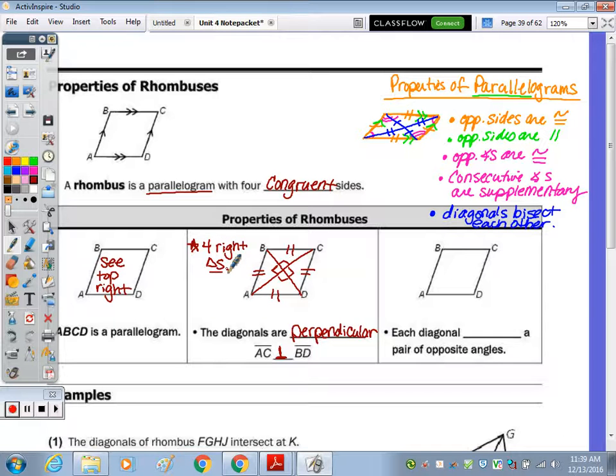And then the last property is that each diagonal is going to bisect a pair of opposite angles. So this angle right here, I'm going to say, looks to be acute. So let's say it's 40. What it means to bisect is when you draw this diagonal, it splits that 40 degree angle into two? 20. 20. Good, Tony. So this is 20, and this is 20. Well, we know opposite angles are congruent because it's a parallelogram. So this is 20, this is 20, this is 20, and that's 20. It's the same for both.